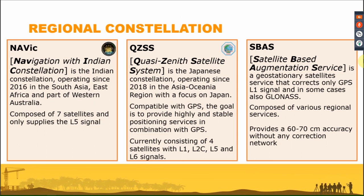Beyond the four global constellations, we also have regional constellations. NavIC — the Navigation Indian Constellation — has been operating since 2016 in South Asia, East Africa, and part of western Australia. It is composed of seven satellites and supplies only the L5 signal.